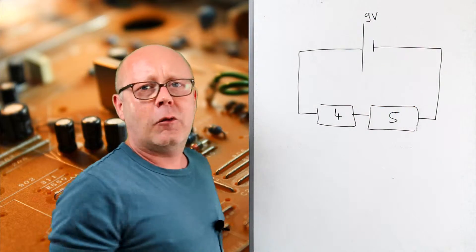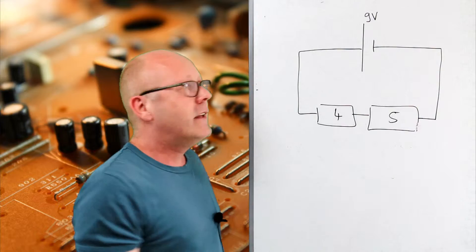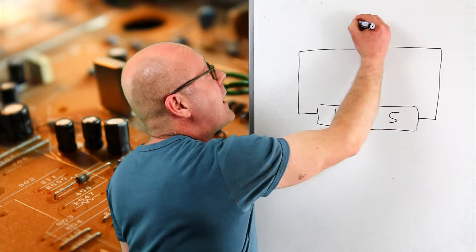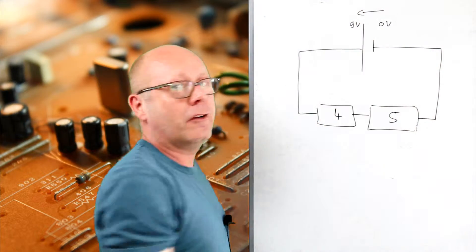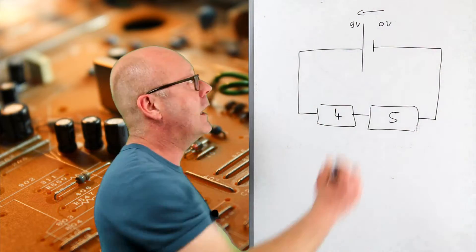When you have nine volts here, what does it mean? It means that you have nine volts here and zero volts there. It's a potential difference, a potential increase of nine volts.